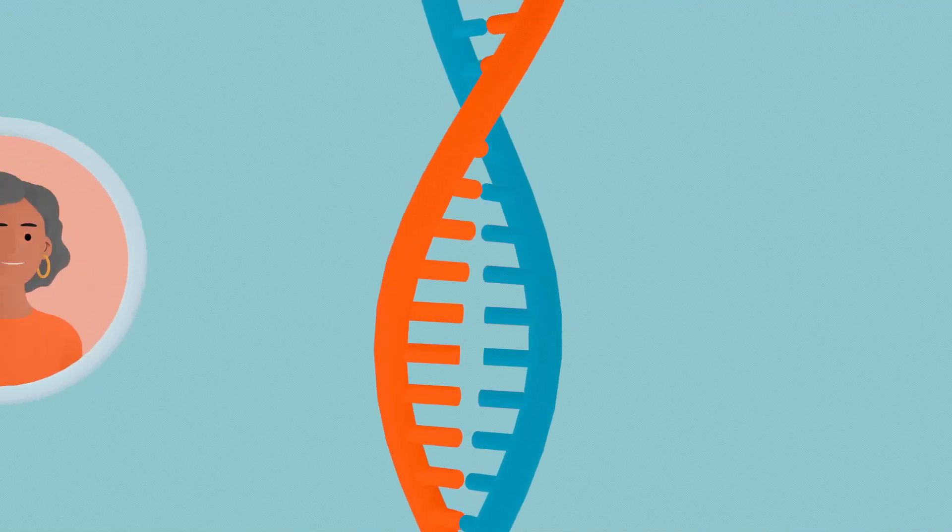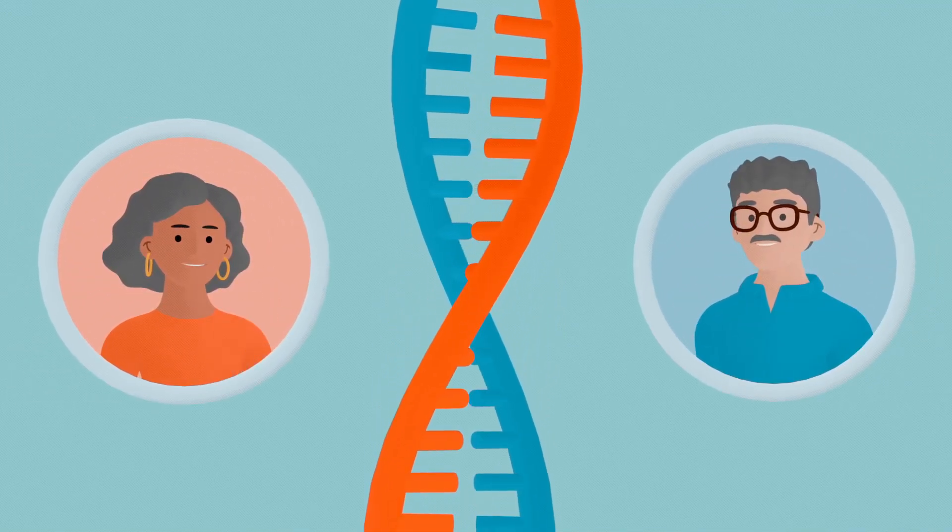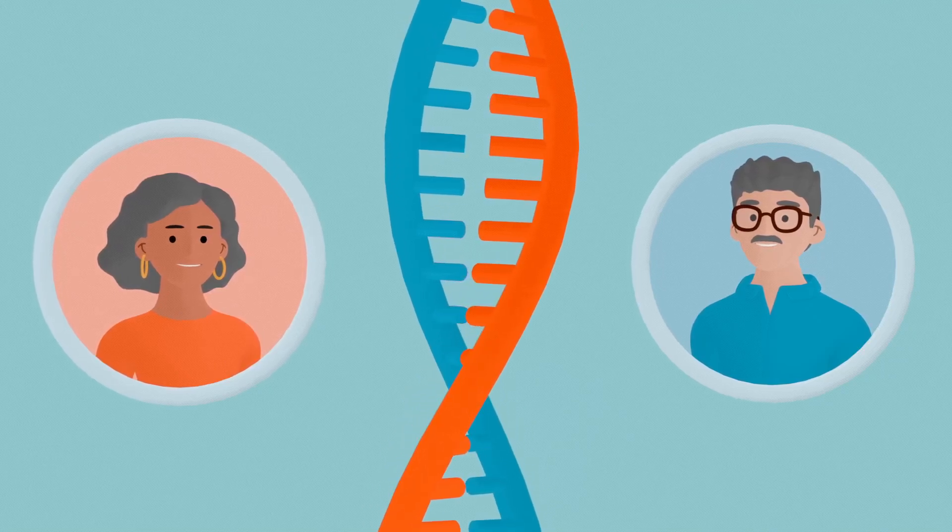One half of your genetic code is from your mother and the other half is from your father. Each parent gives you one copy of every gene in your body.